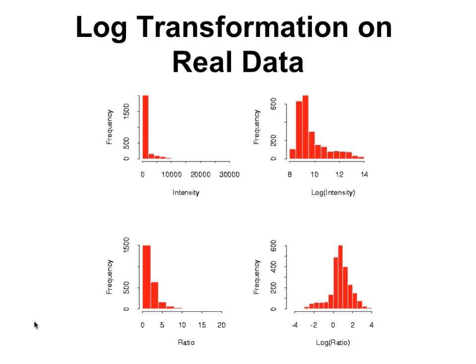This is an example of real data from a microarray experiment showing log transformations. They're not perfect Gaussians, but you can see they are more like a bell curve on the right than the ones on the left before taking the log. In real-life situations, that's often as good as you can do to try to get a real Gaussian distribution.